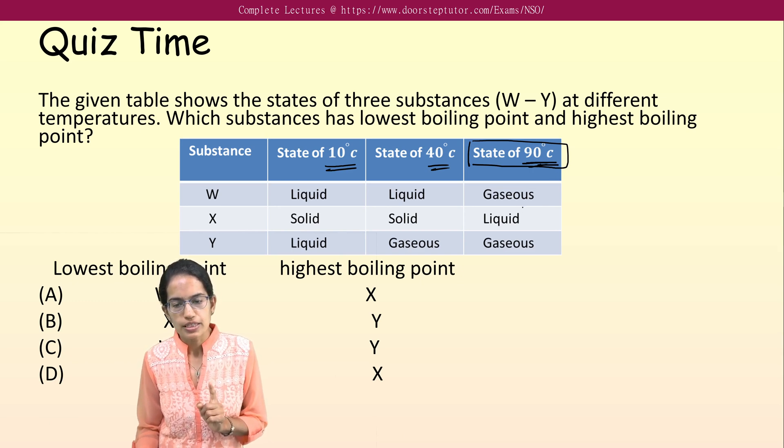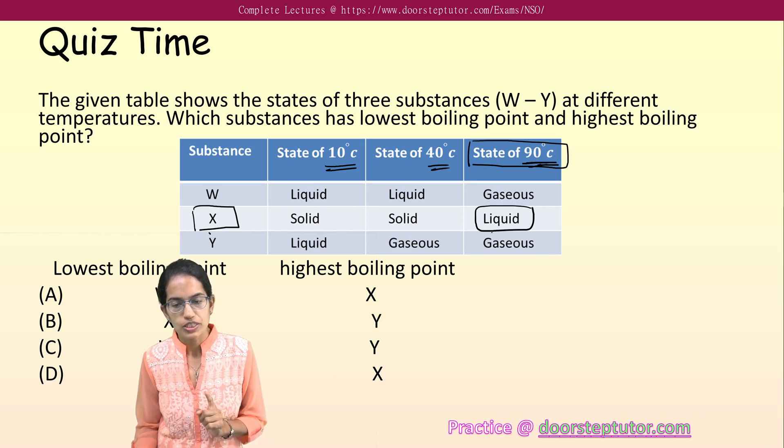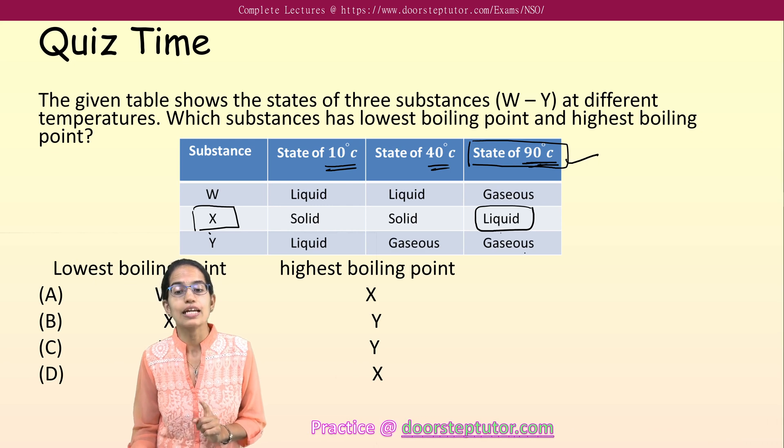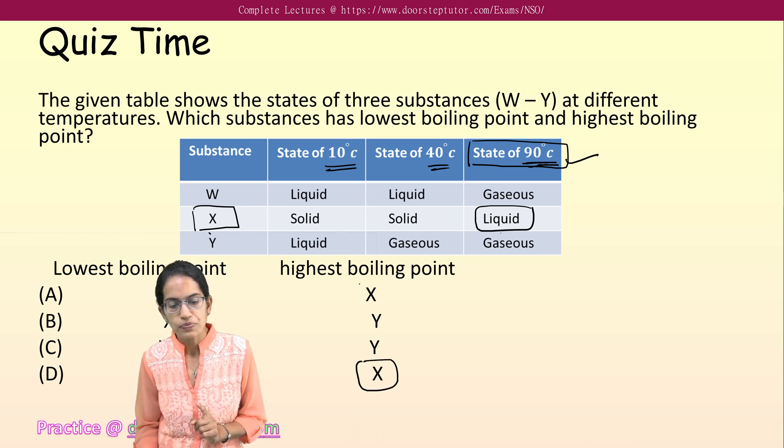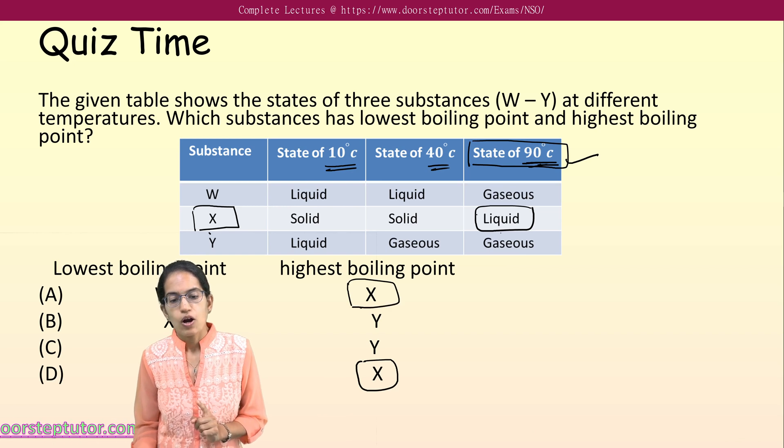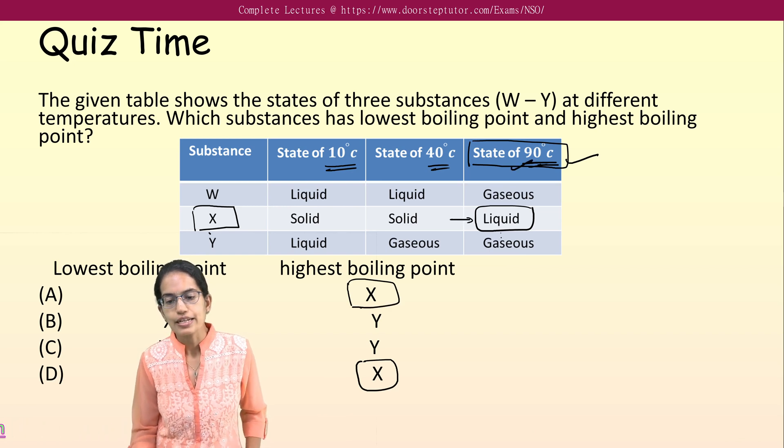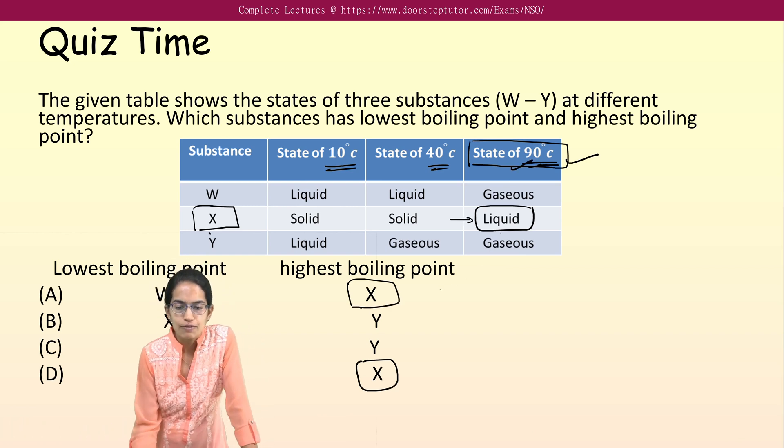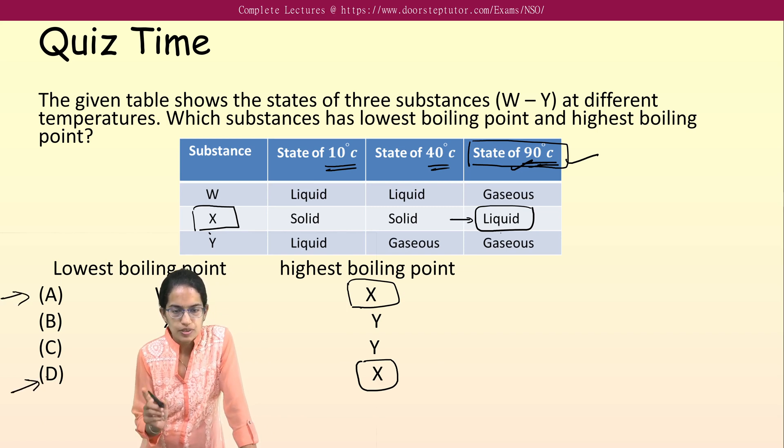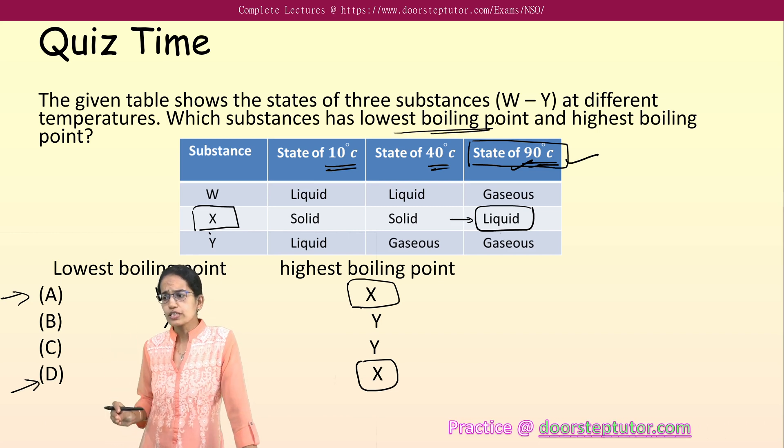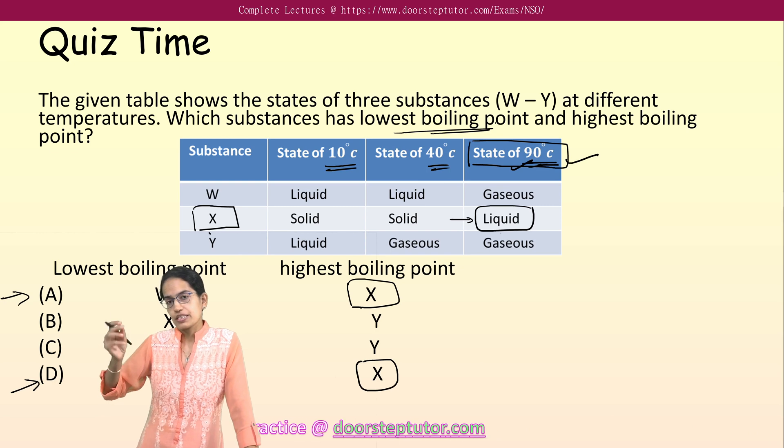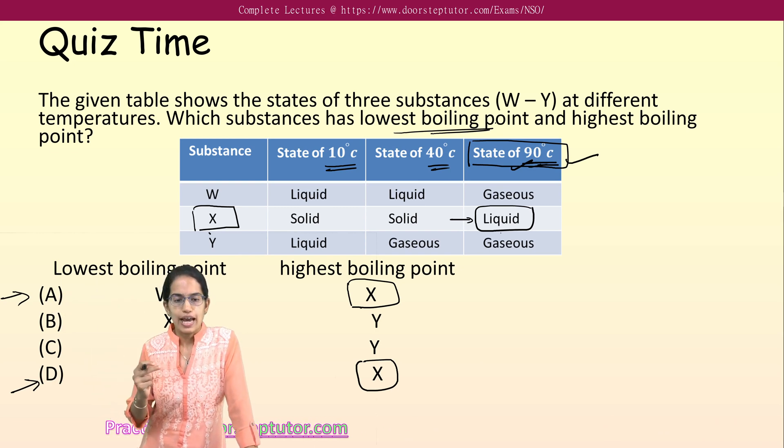X is the only substance which is in liquid state till 90 degrees Celsius. That's it, it's still not boiling, or it starts boiling at 90. That means it has the highest boiling point. So either A or D could be the answer. Now we have to identify lowest boiling point. Lowest boiling point means as we increase the temperature, it quickly becomes gas.